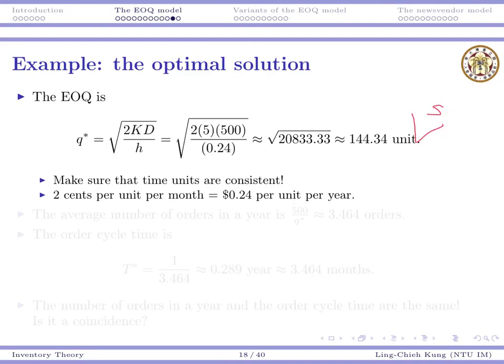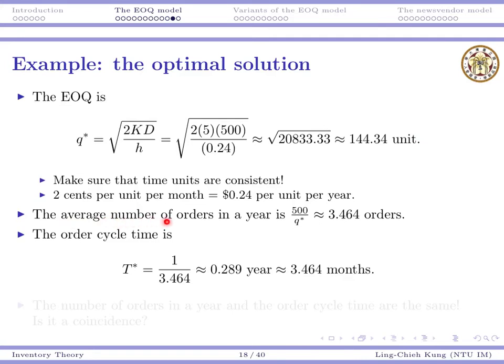The average number of orders per year is D/q*. We need 500 units total, ordering q* units each time, so roughly 3.464 orders per year. The order cycle time is the time between two orders, which is 1/3.464 years. Every 0.289 years we make an order, roughly three and a half months.